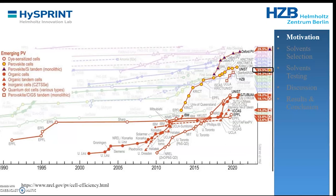Perovskite solar cells have emerged in the last few years and are now considered one of the most promising PV technologies. Device efficiencies jumped from around 3% in 2009 to over 25% now — a huge jump in a limited time scale. However, the highest performing cells are based on lead, which is a toxic heavy metal, and any leakage to the environment is very harmful. This toxicity is a big obstacle in the way of perovskite solar cell commercialization.